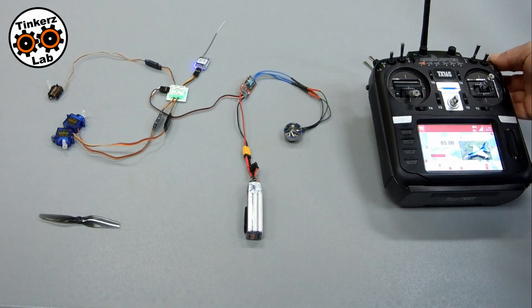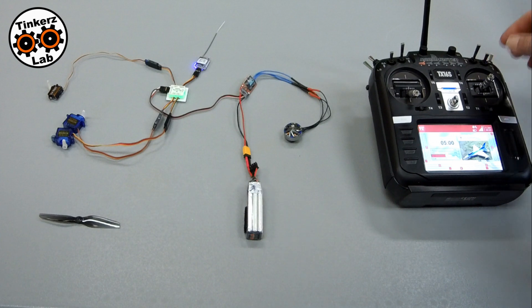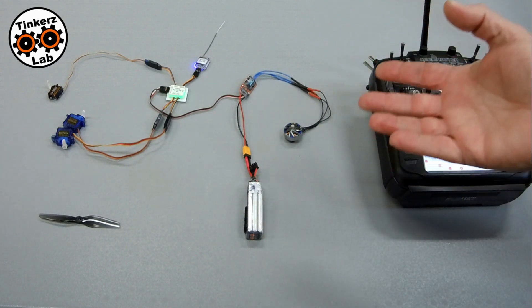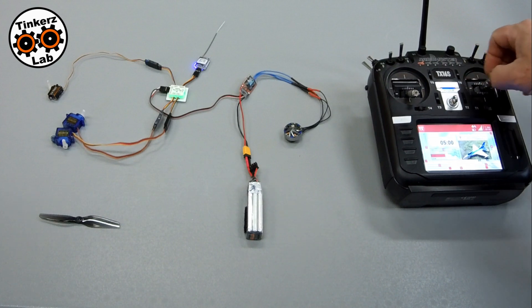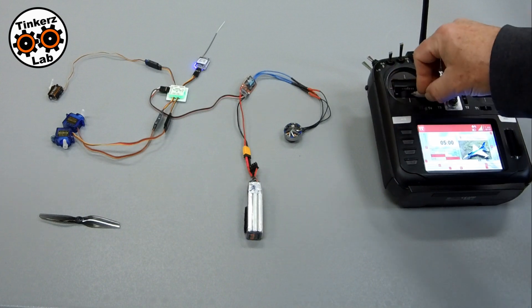Now if I put it in full manual mode, not only will it not correct anything, but you'll notice that I have a lot more movement on the servos now. Elevator, aileron, rudder.